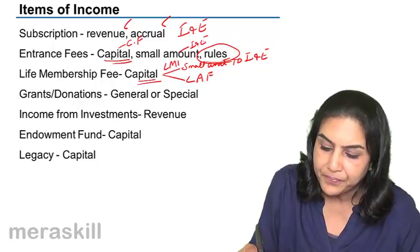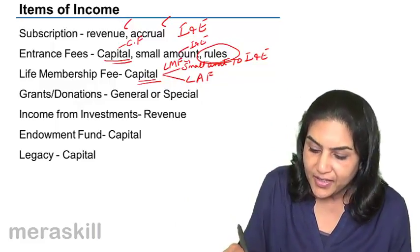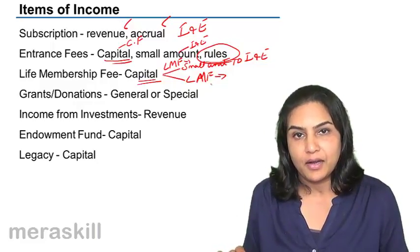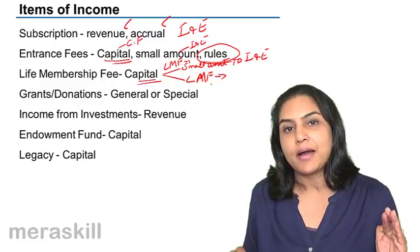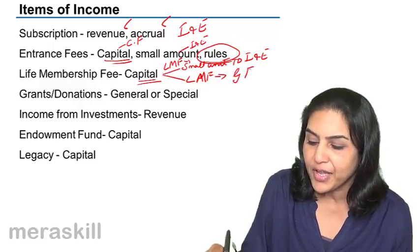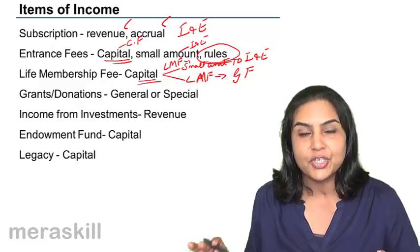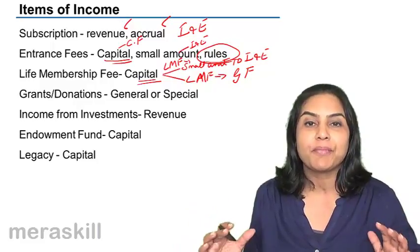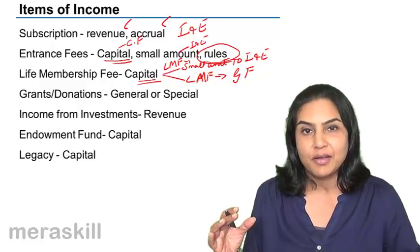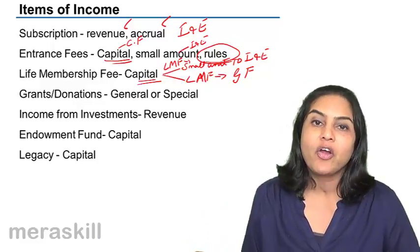Every year a small amount is recognized as income from the life membership fund. Alternatively, the life membership fund is retained in the balance sheet. When the membership is terminated, the amount may be transferred to the general fund, capital fund, or accumulated fund. A non-profit organization does not have any capital. Whatever money is brought in by members is in the nature of an entrance fee or subscription. Whenever the non-profit organization makes a surplus, this surplus is kept in an account called the general fund, accumulated fund, or capital fund.